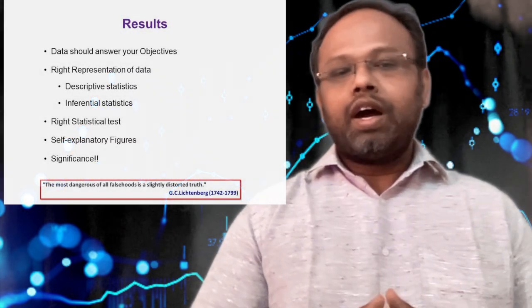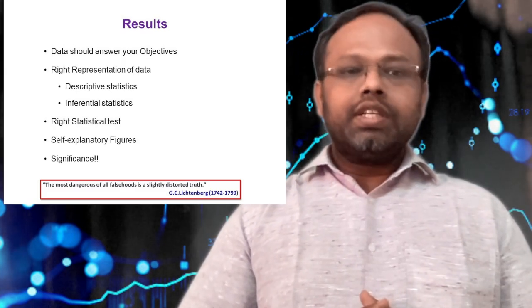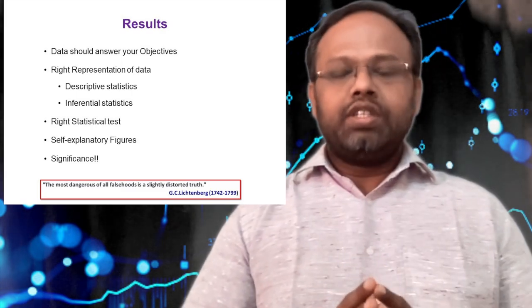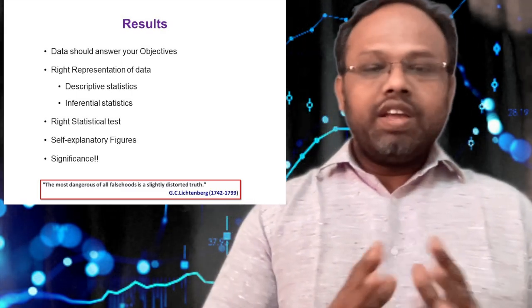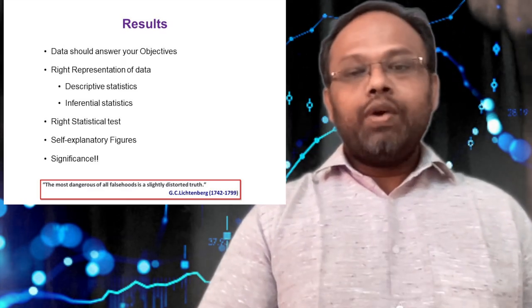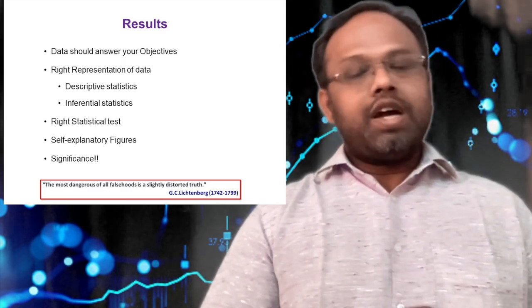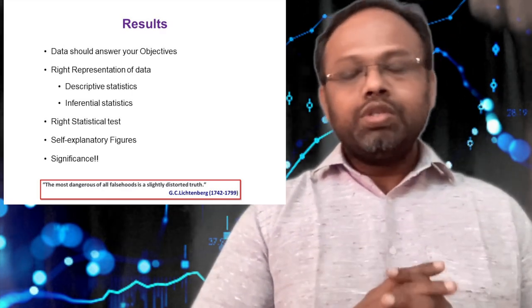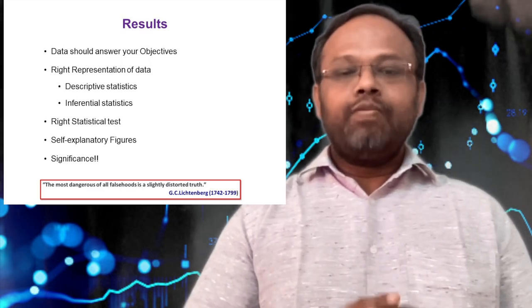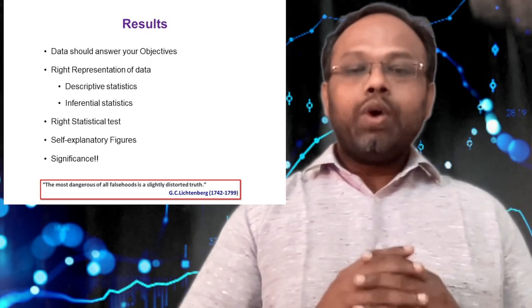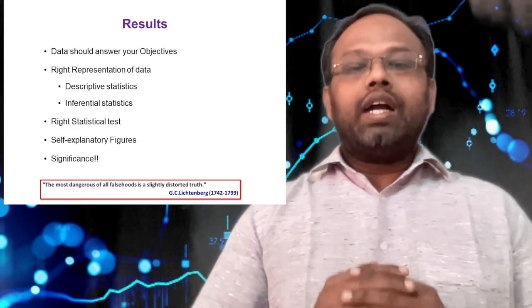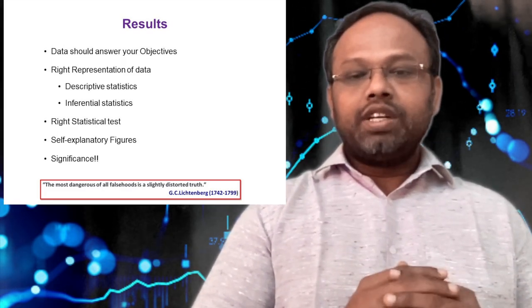Before summing up, I want to make you clear: when you are writing the results, you should always keep in mind that your data should answer your objectives. You should not deviate from your study objective. Secondly, you have to rightly represent the data and rightly visualize the data. Wherever you are using descriptive statistics, wherever inferential statistics is necessary, you have to apply. Then you have to choose the right choice of test based on the type of variable and the parametric nature of the data.